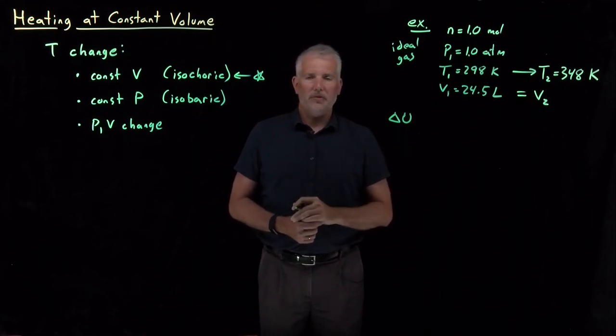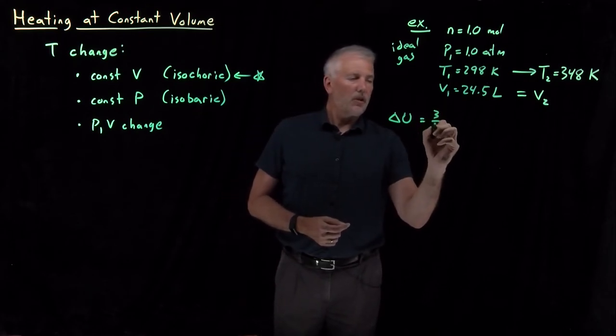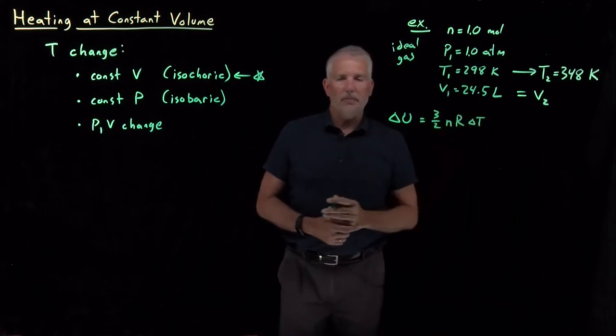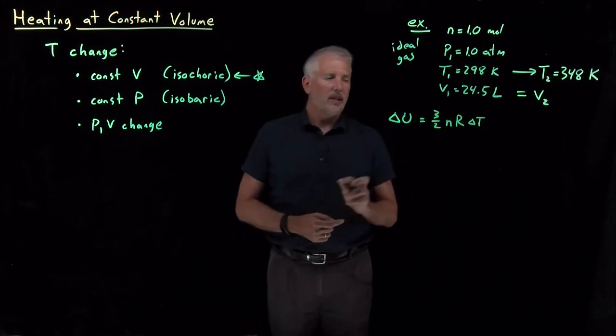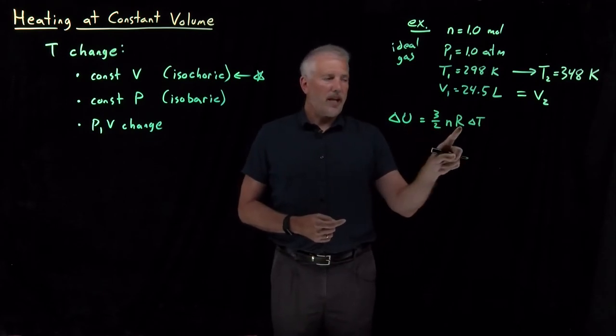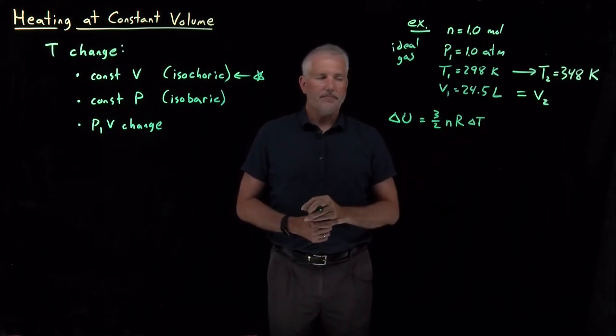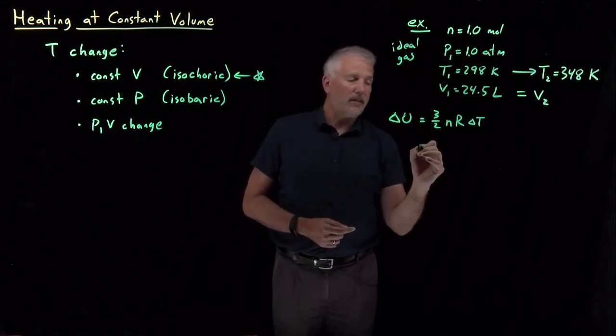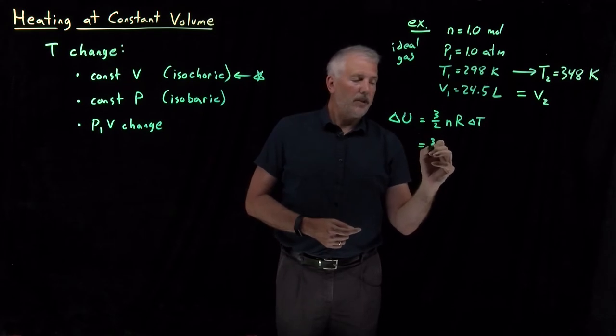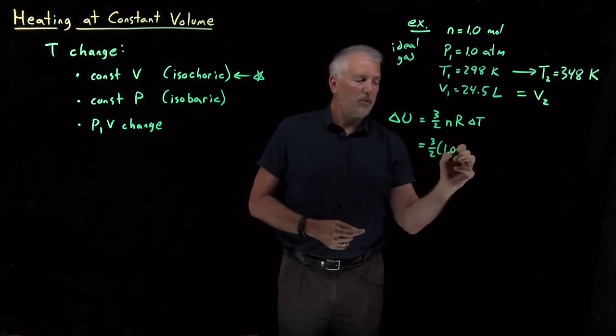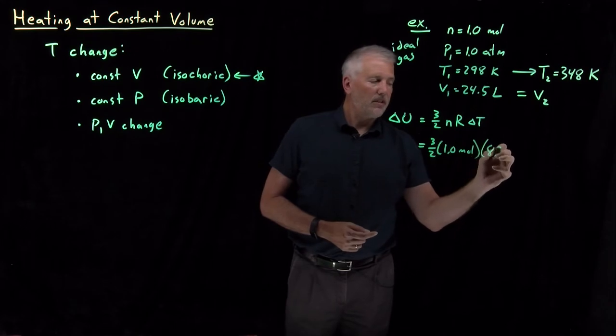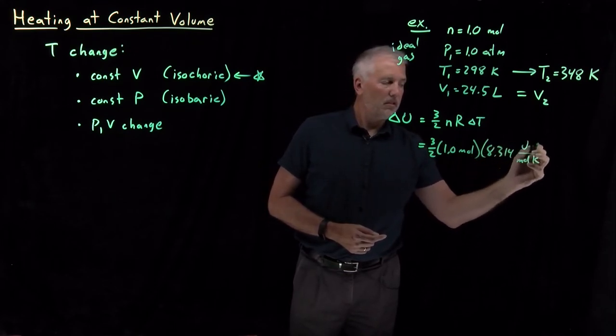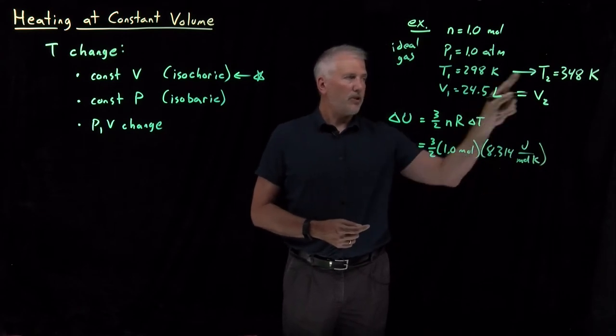Delta U is fairly easy to calculate. We know for a gas that obeys the 3D particle in a box model, so what we've been calling an ideal gas, delta U is three halves nR delta T. So it turns out I don't need to know anything about the pressure and the volume. I do need to know how many moles of the gas I have. But if I calculate three halves times one mole times the gas constant, multiplied by the change in temperature, this 50 degree increase.